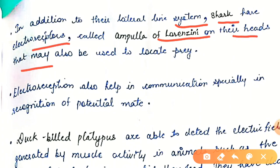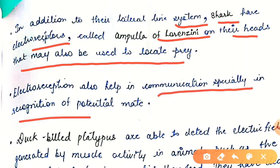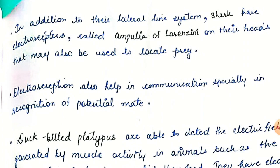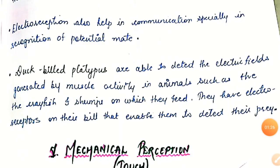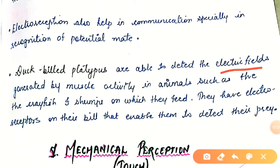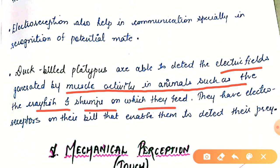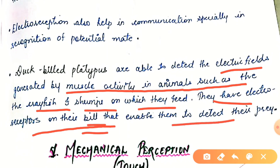Electroreception also helps in communication, especially in recognition of potential mates. In the duck-billed platypus, they are able to detect the electric fields generated by muscle activity in animals such as crayfish and shrimps on which they feed. They have electroreceptors on their bill that enable them to detect their prey.